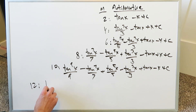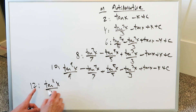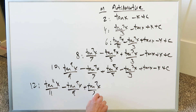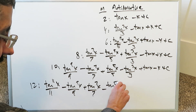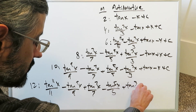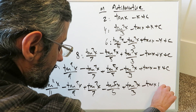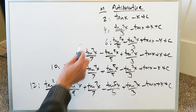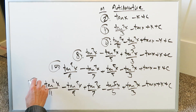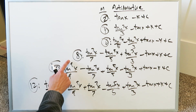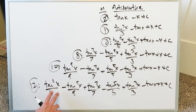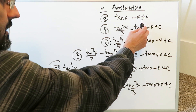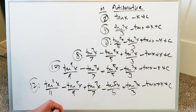For exponent 12: tan¹¹(x)/11 − tan⁹(x)/9 + tan⁷(x)/7 − tan⁵(x)/5 + tan³(x)/3 − tan(x) + x + C. And we're done. The pattern is clear: for any even exponent, the next item in the antiderivative is a single exponent lower. If the exponent is 8 it's 7; if 10 it's 9; if 14 the next term is tan¹³(x)/13. Each term alternates positive minus positive minus until you reach tan(x) and x at the end, with signs depending on where you've arrived in the sequence.